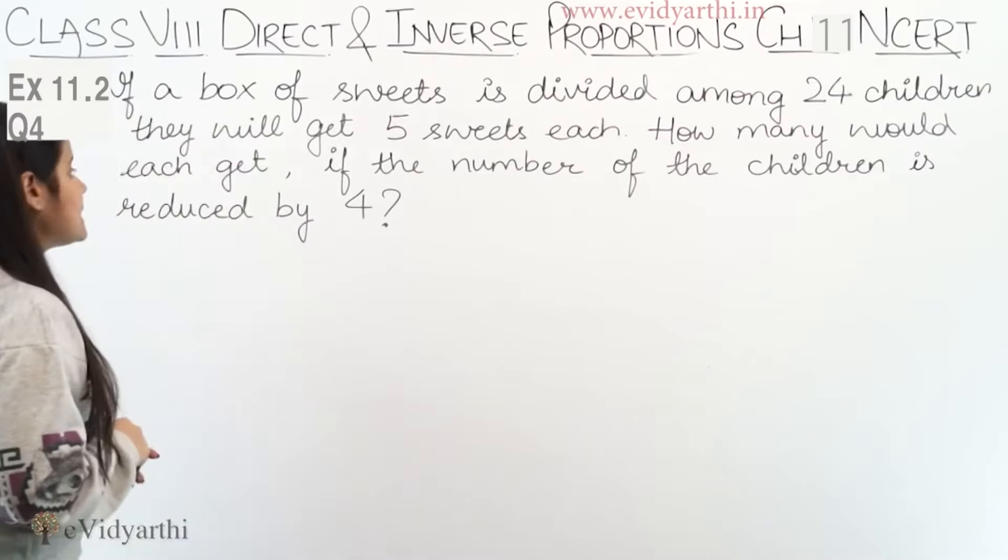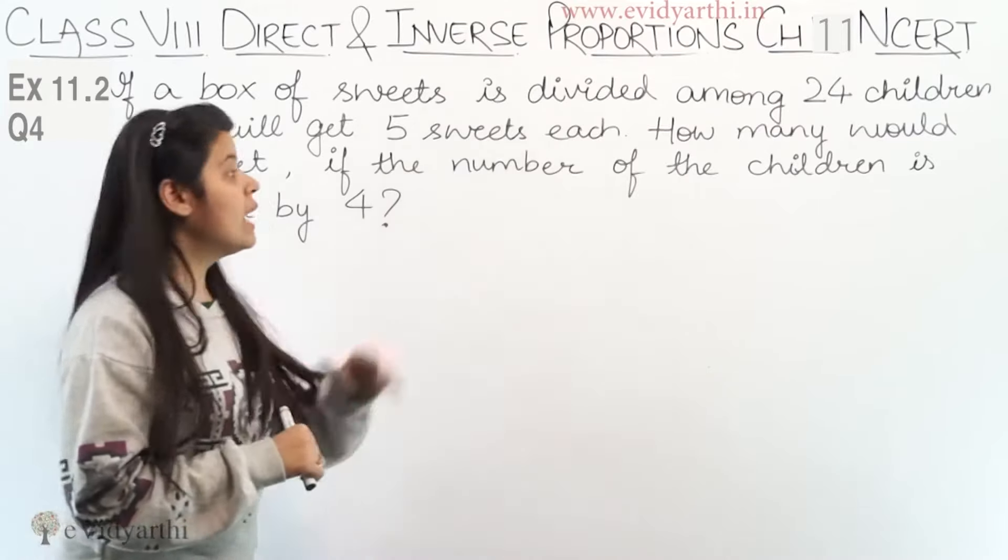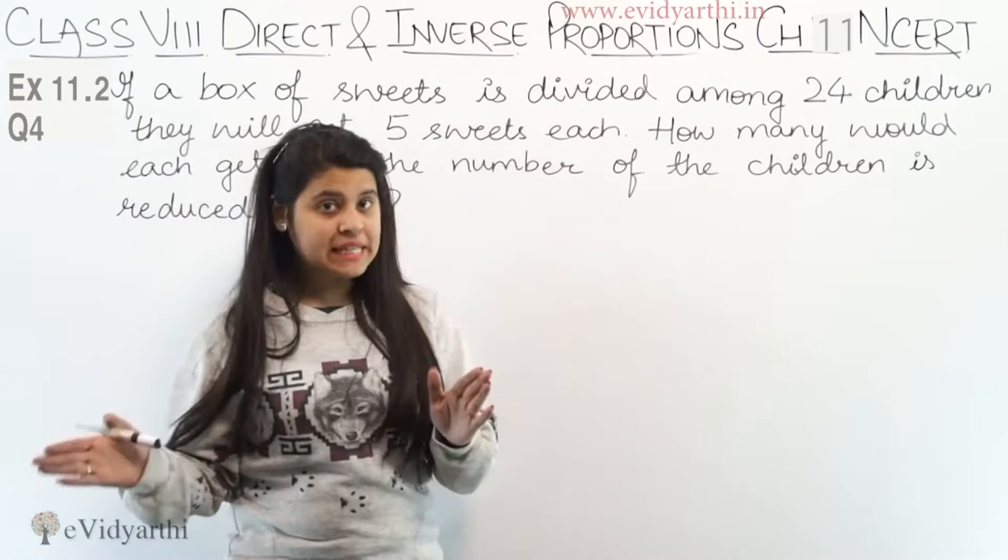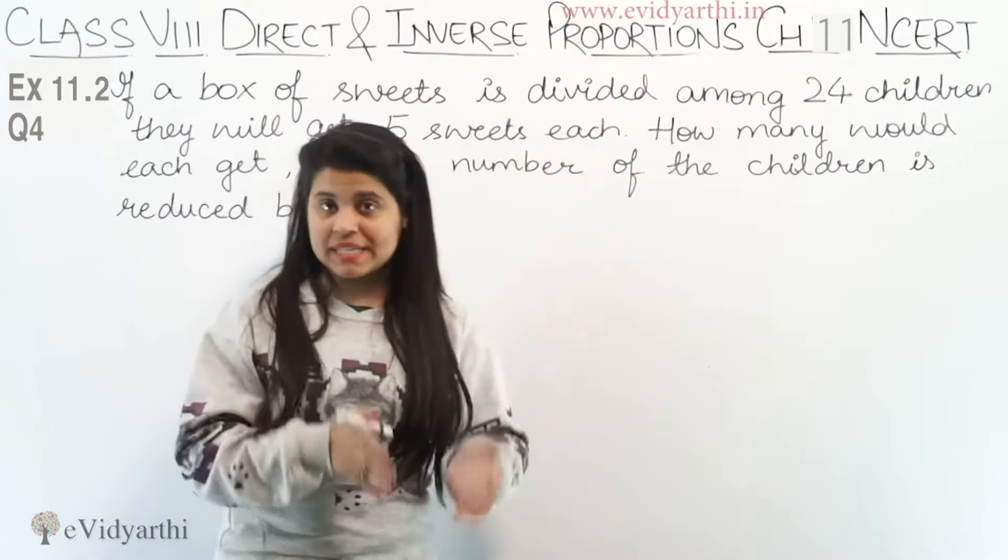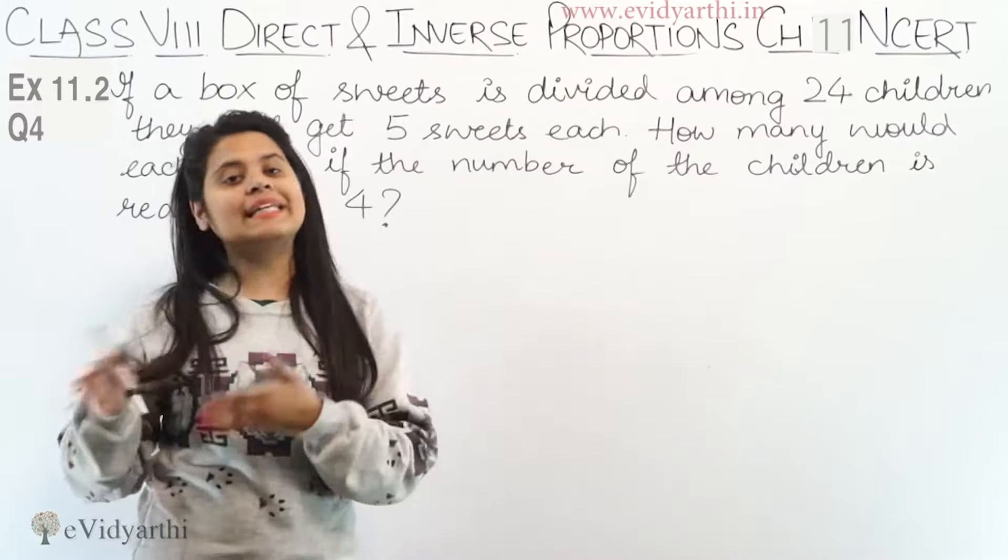How much would each get if the number of children is reduced by 4? So 24 children minus 4 children means 20 students will be left. How much will they get?